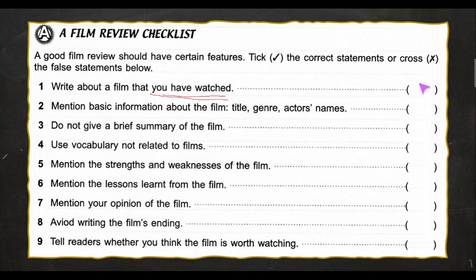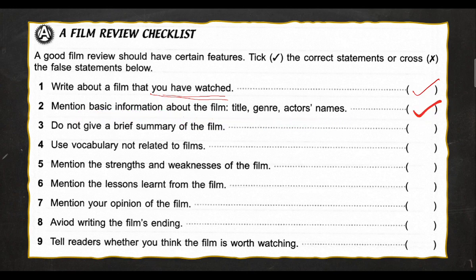Number one: a good film review should write about a film that you have watched. 'You have watched' — this is the keyword. Is it true or not? Yes, this one is true. Number two: mention basic information about the film — title, genre, actor's names. Do you need to include this in a movie review? Yes, because when we read a review, we want to know the basic things about it.